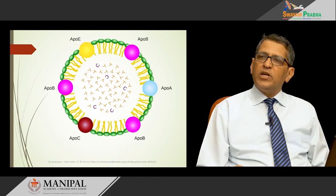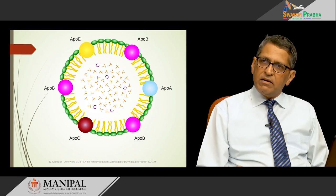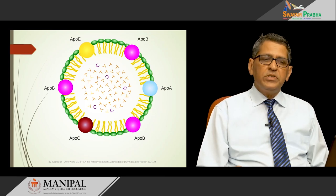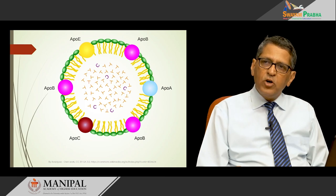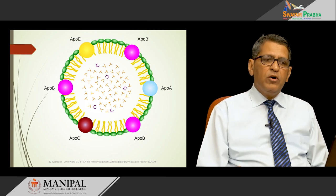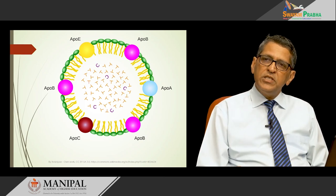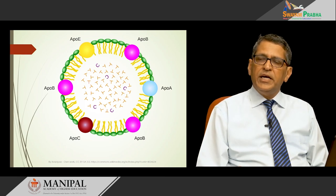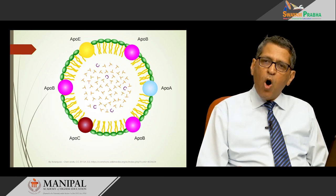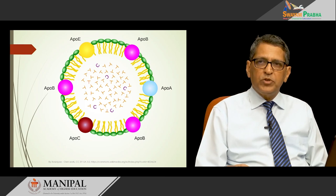To summarize the structure of a lipoprotein: they are spherical macromolecules and complex lipids. The central neutral lipid core is made up of triacylglycerol and cholesterol ester. The peripheral layer is made up of phospholipids and cholesterol. The proteins present in lipoproteins are of two types: integral apoproteins or peripheral apoproteins.